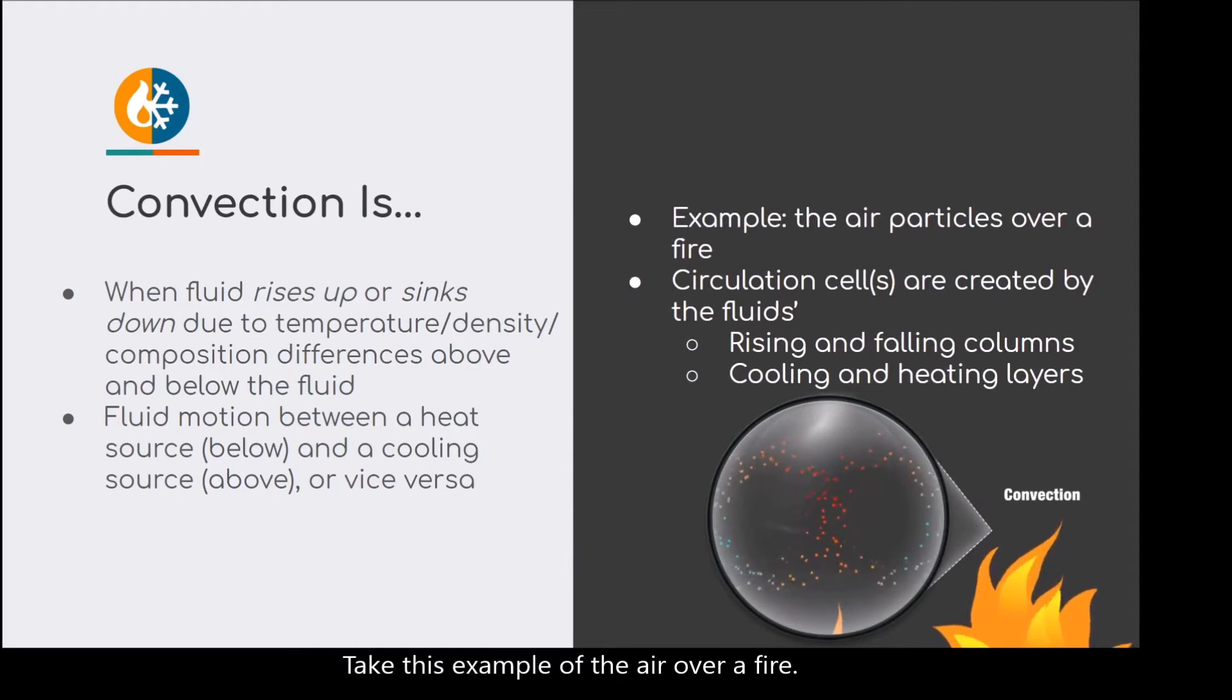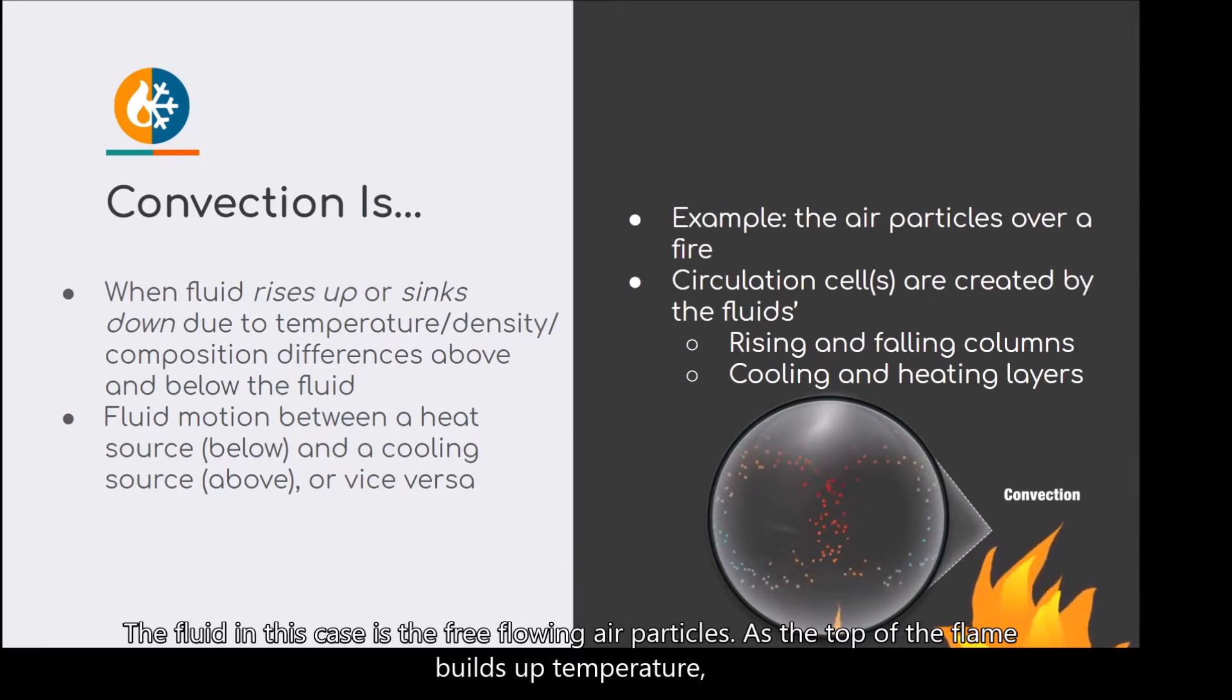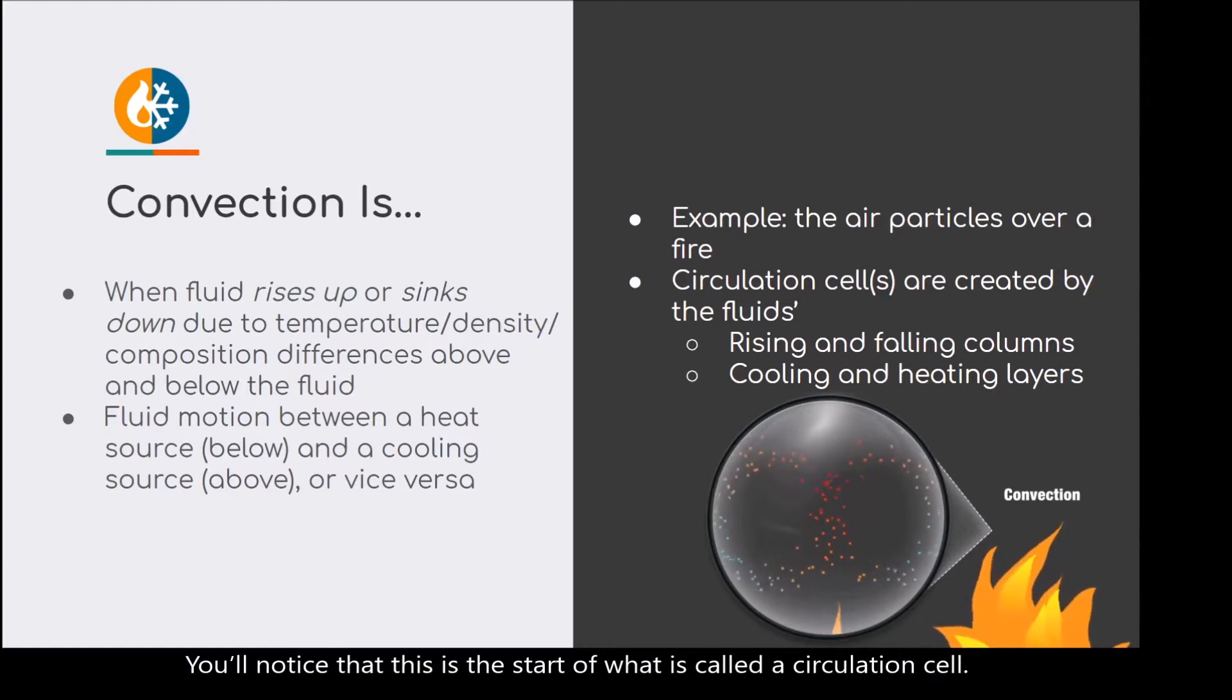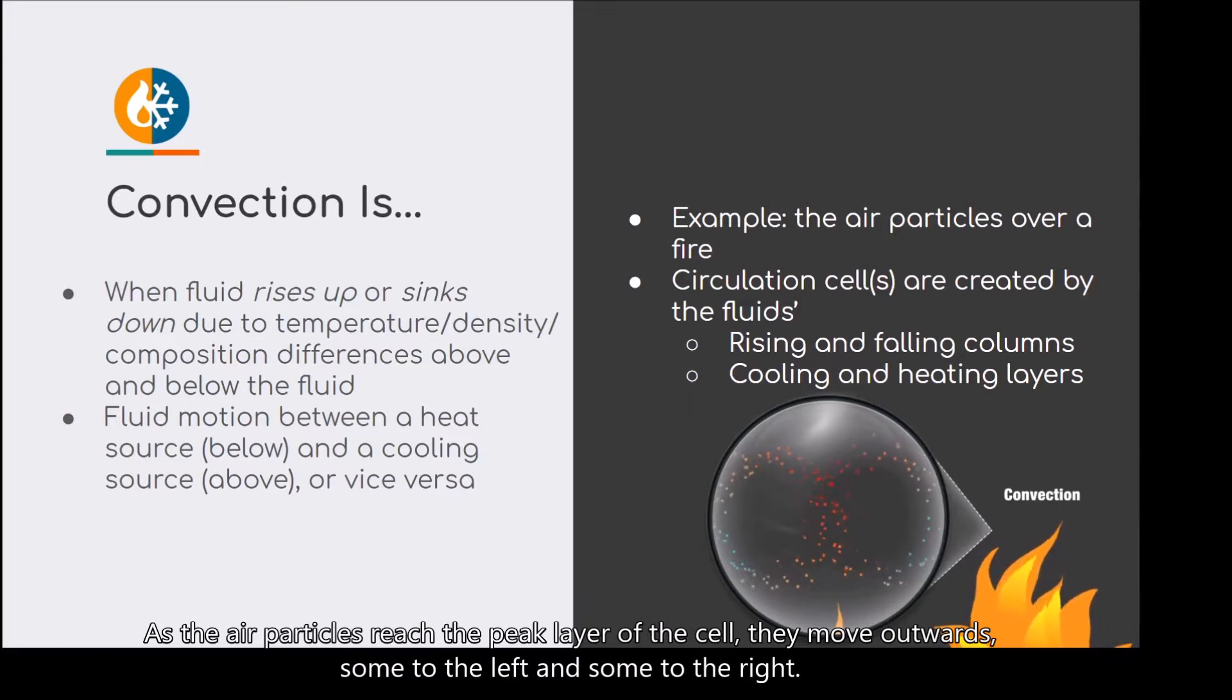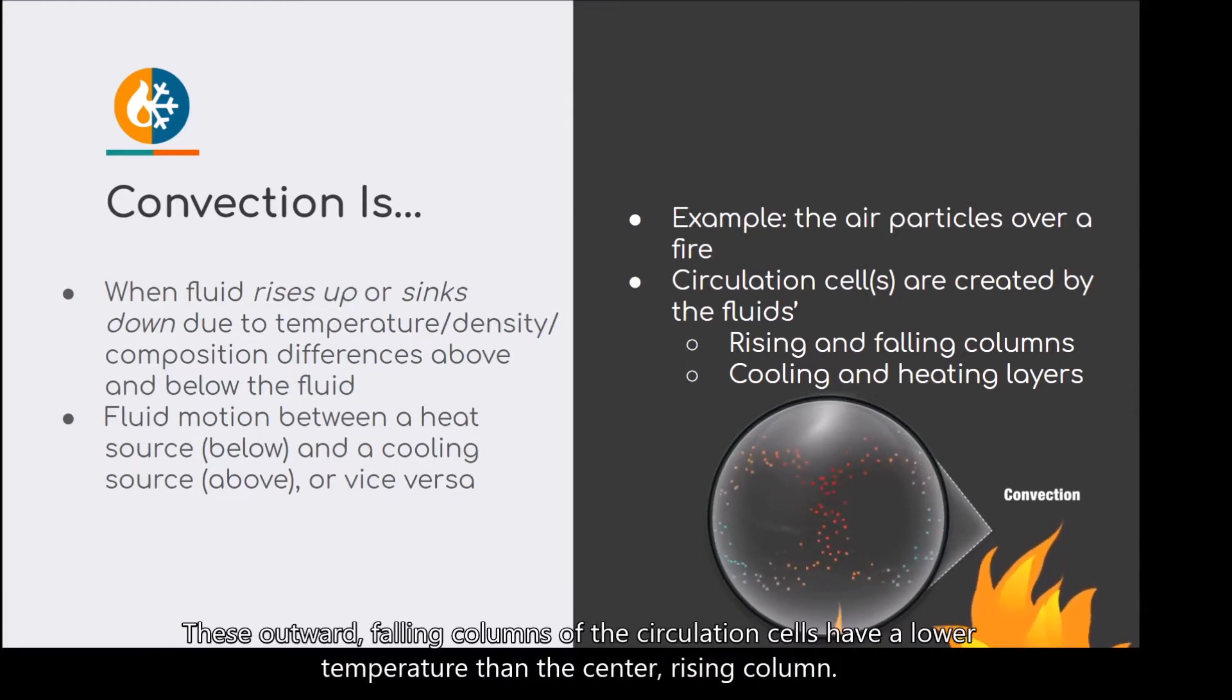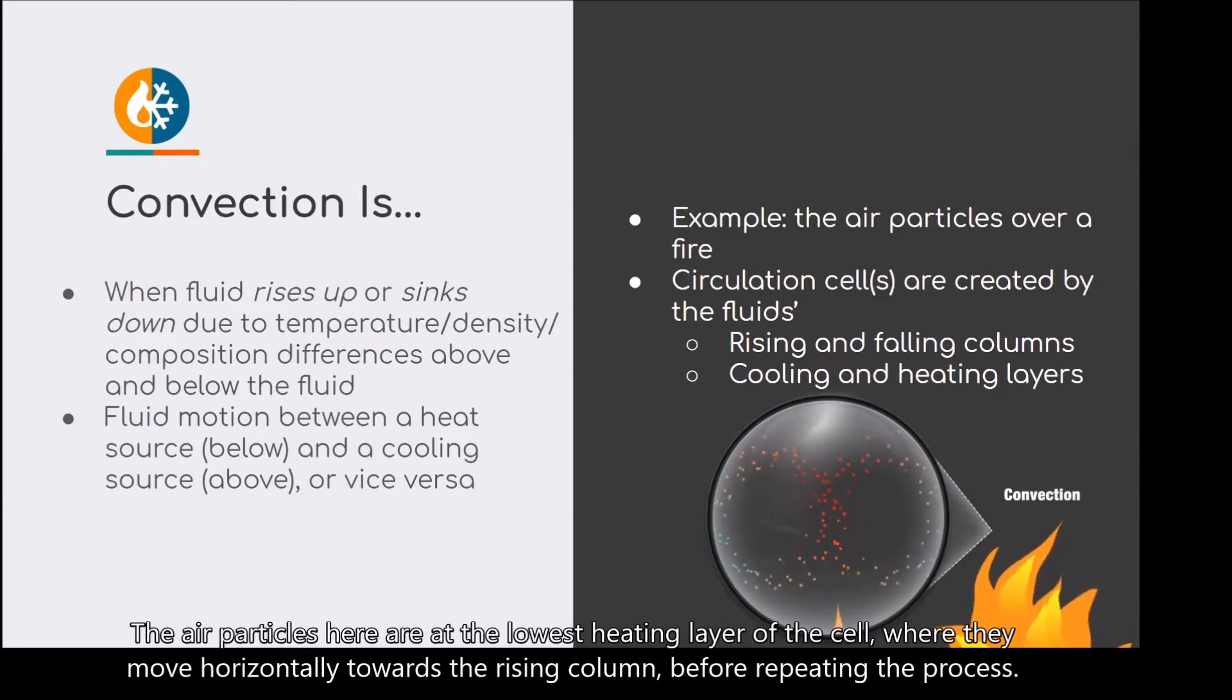Take this example of air over fire. The fluid in this case is the free-flowing air particles. As the top of the flame builds up temperature, the air particles above this heat source move vertically in a rising column. You'll notice that this is the start of what we call the circulation cell. As the air particles reach the peak layer of the cell, they move outwards, some to the left and some to the right. They travel along this horizontal peak until sinking back down at the outer side of the cell. These outward falling columns of the circulation cells have a lower temperature than the center rising column. The air particles here are at the lowest heating layer of the cell, where they move horizontally towards the rising column before repeating the process.